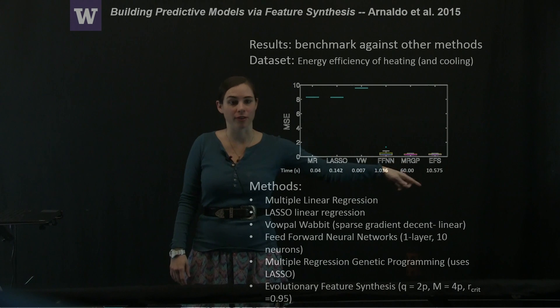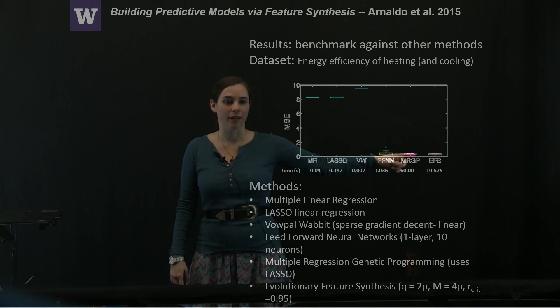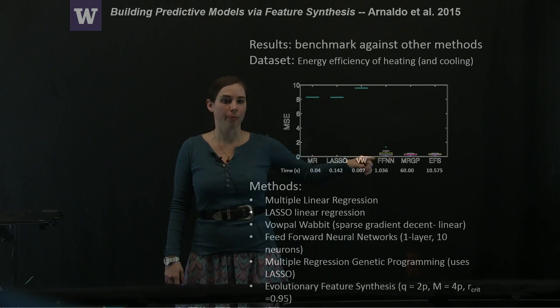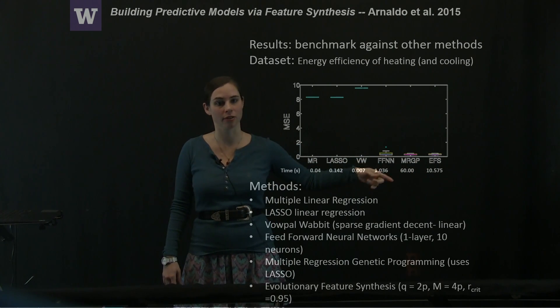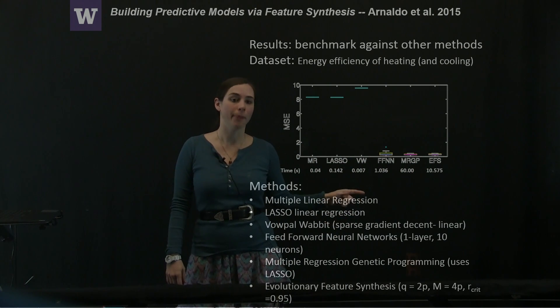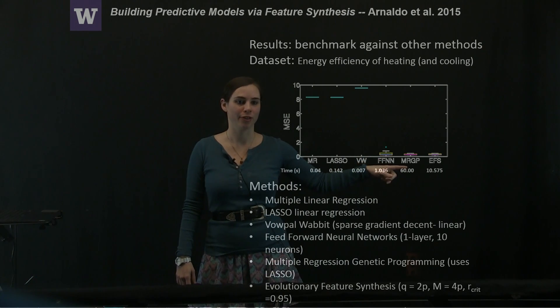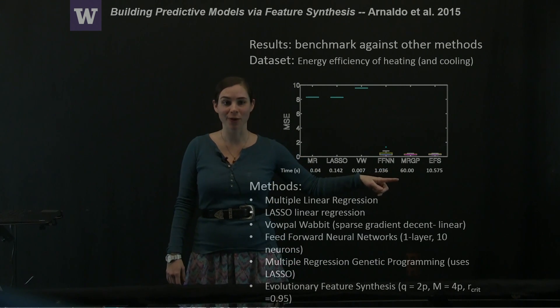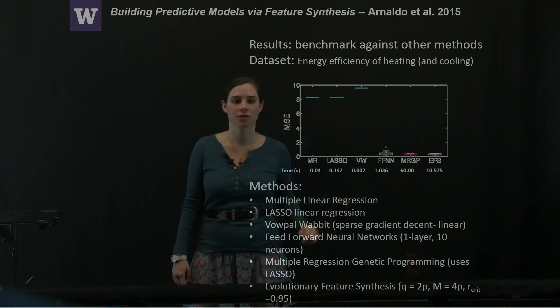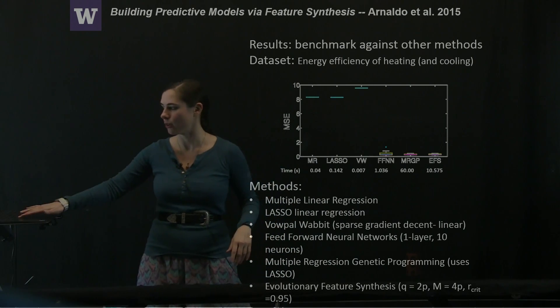These other methods, so the neural net and the genetic programming, all produce good mean squared errors, at least compared to the linear models, but the feedforward neural net is very fast, the multiple regression genetic programming is quite slow comparatively, and the evolutionary feature synthesis is somewhere in the middle.